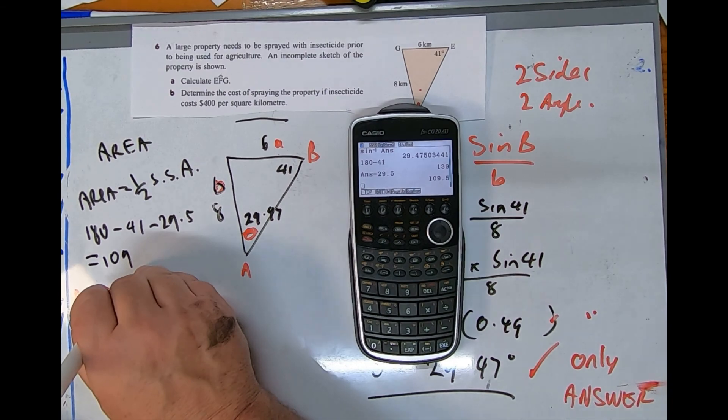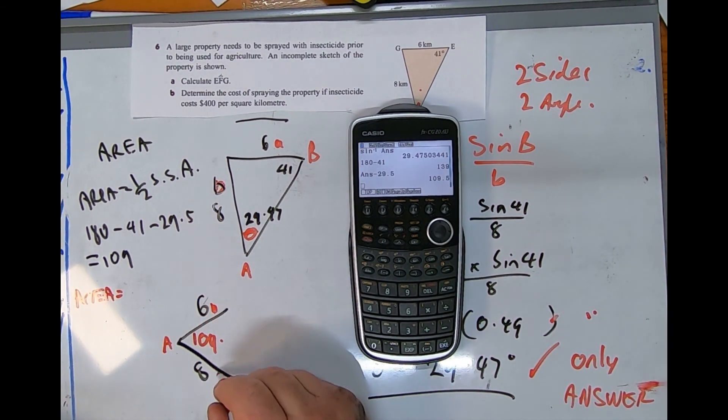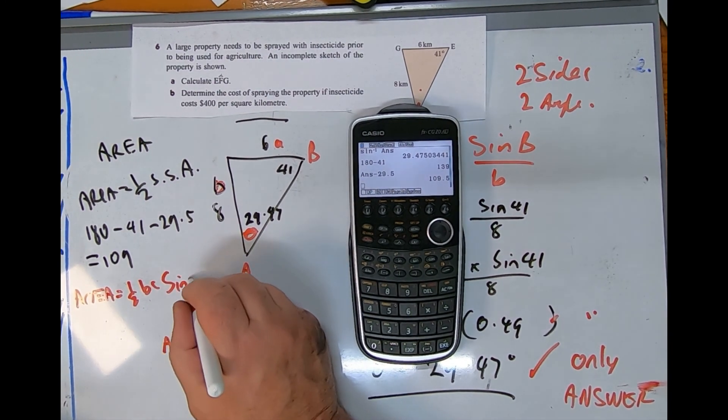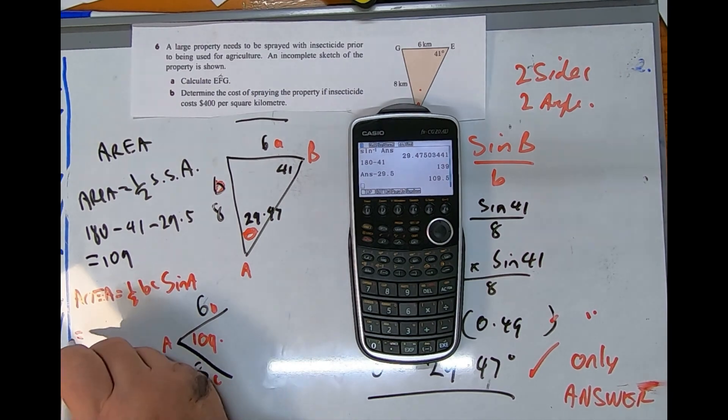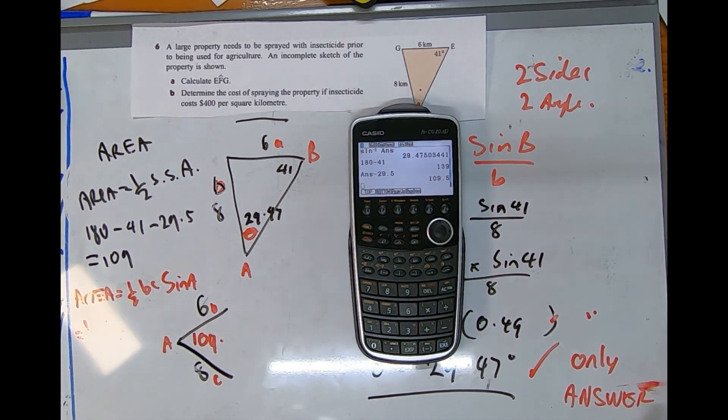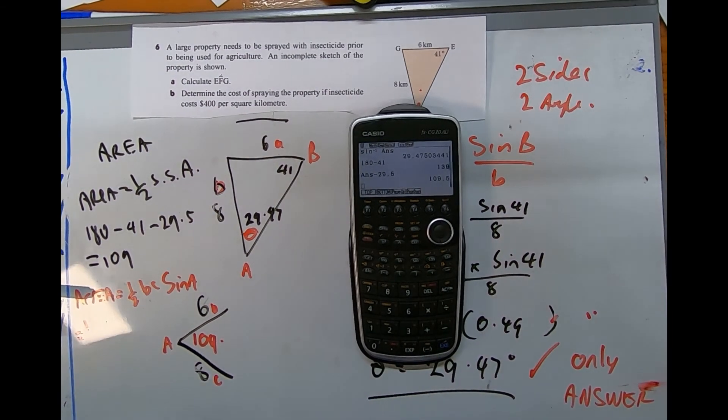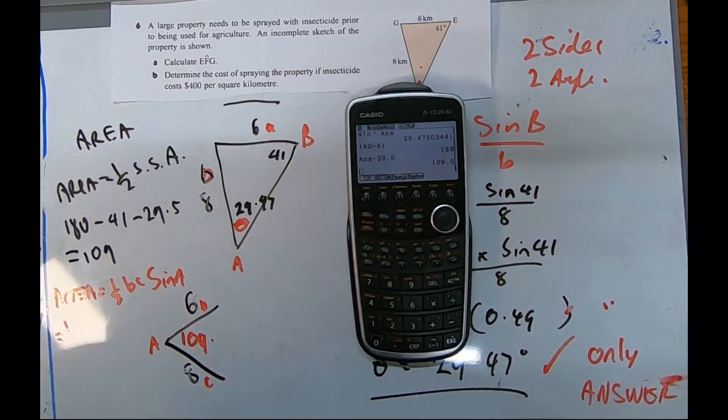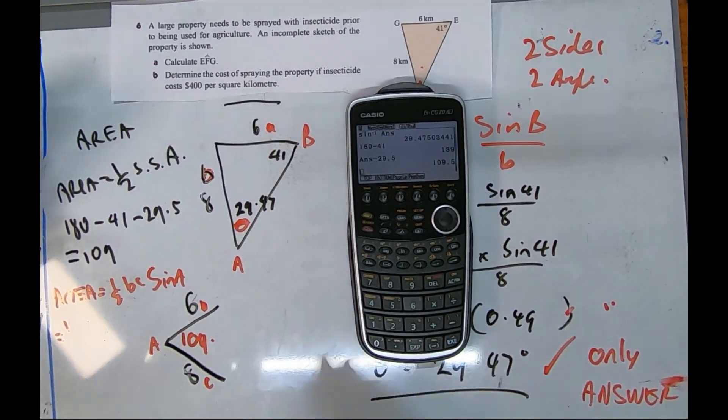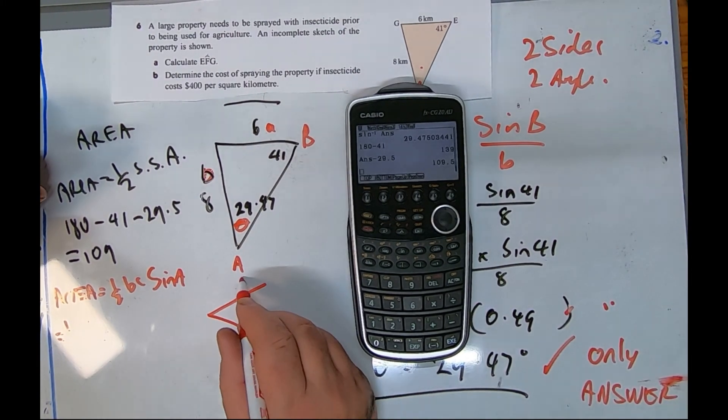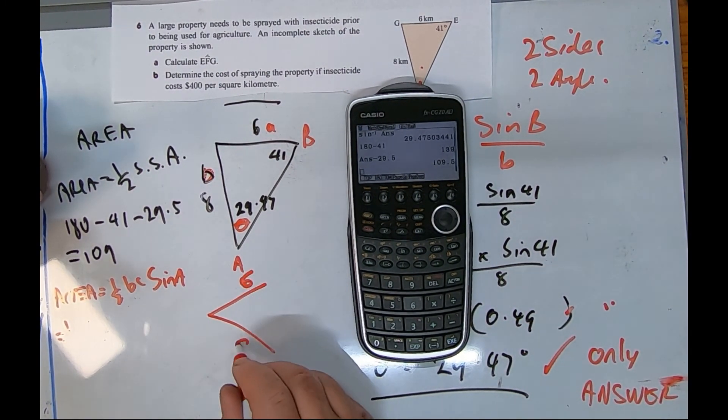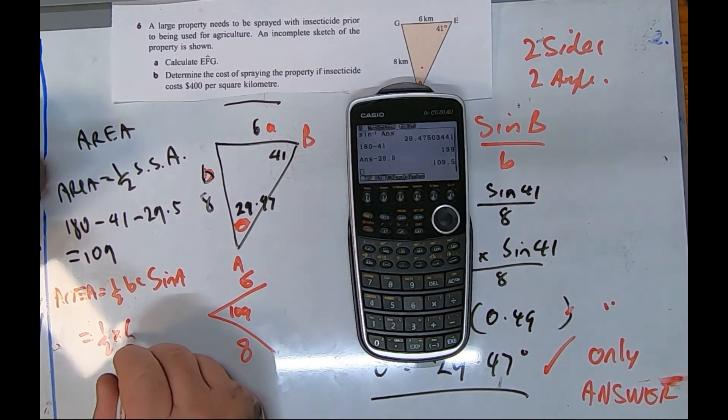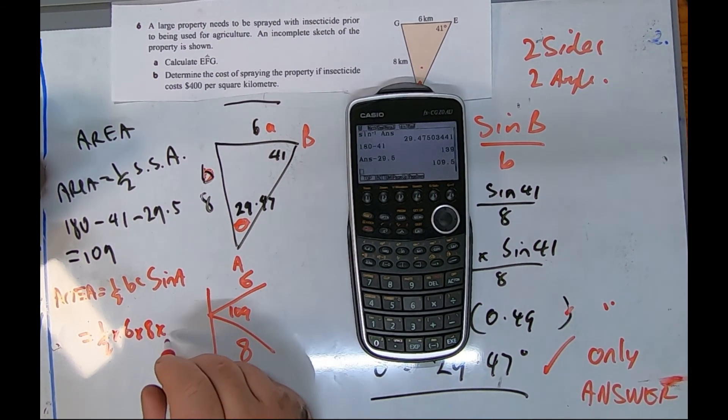So for my area calculation I'm just going to go down here, change colors, write the rule, some new letters. It's one half b c sine A. Can we see this? We'll just redraw this over here. Six, six, six, eight, one oh nine.